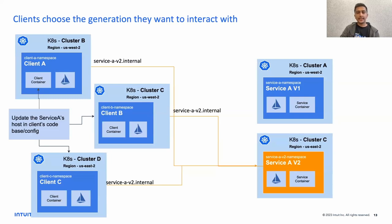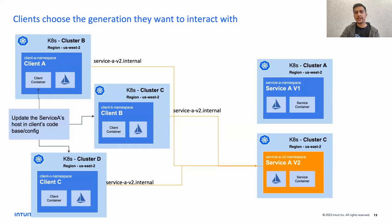This would have been easier with a usual DNS migration use case, where we do a cutover by changing the underlying CNAMEs so that traffic migration is seamless. But with Mesh, that is not the case. With Mesh, the configs have to be available on the client side so they know which service, where it is located, and how they can reach it. So it's not as straightforward as a normal DNS cutover.